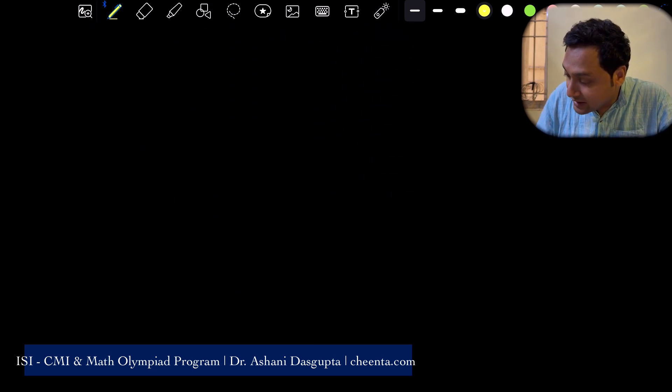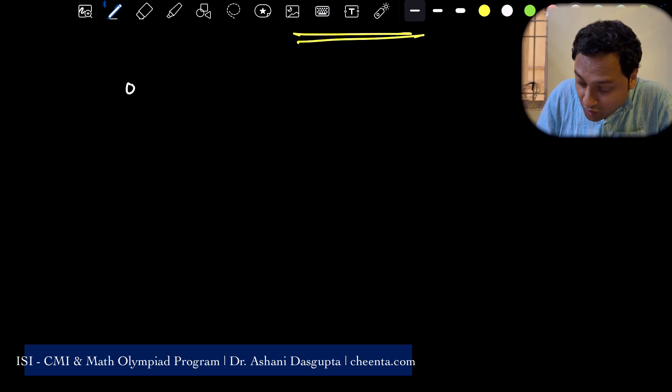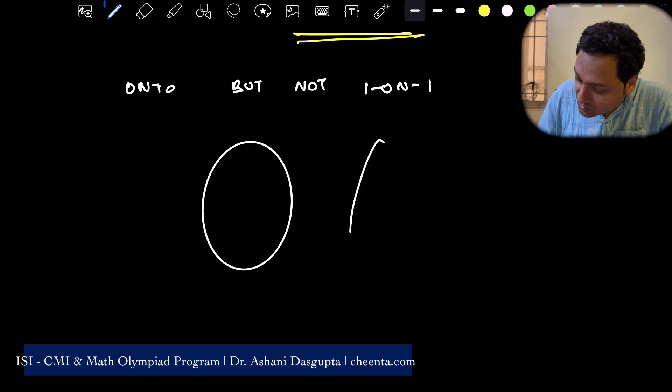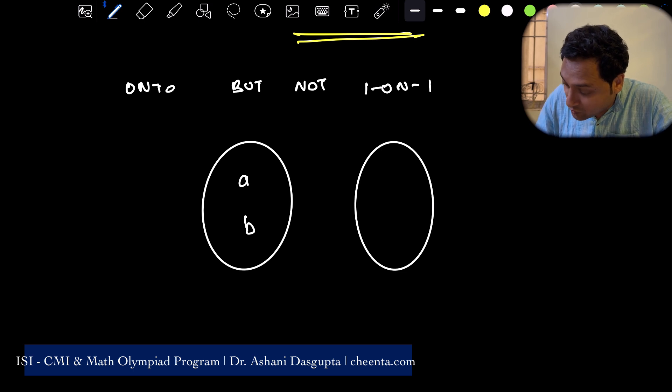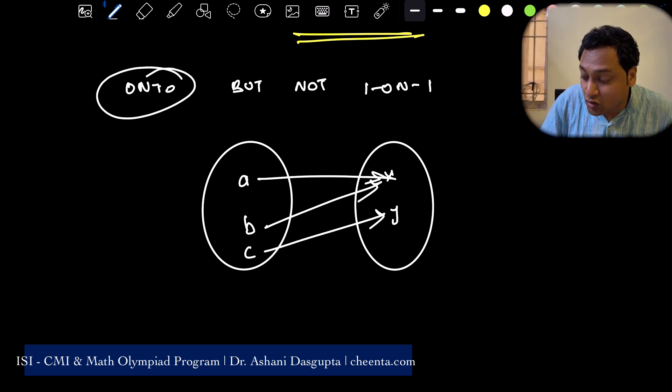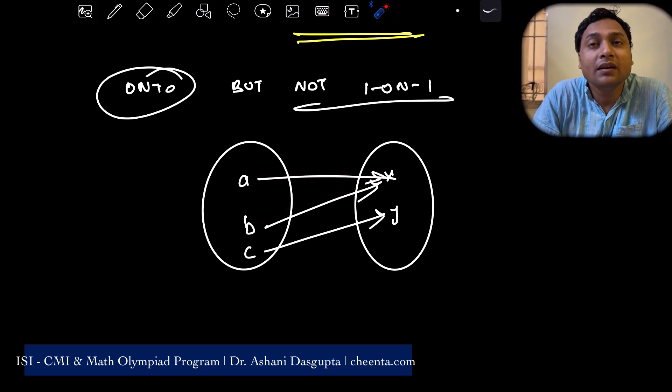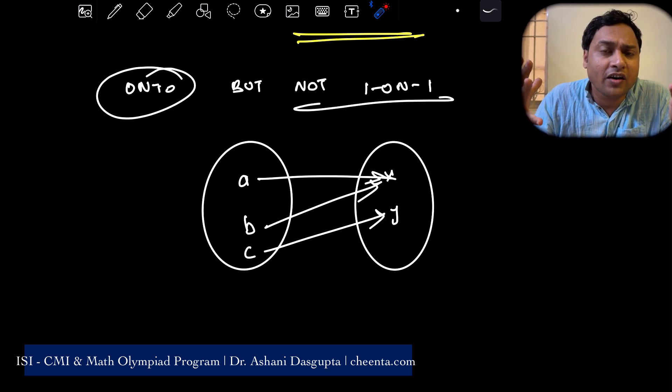In fact, I can create a function which is onto but not one on one. So we have domain as a, b, c and the co-domain as x and y. So a goes to x, b goes to x, c goes to y. This is an example of a function that is onto but not one on one. Not one on one because a and b are going to the same element. So I hope you understand the concept of one to one functions and onto functions.